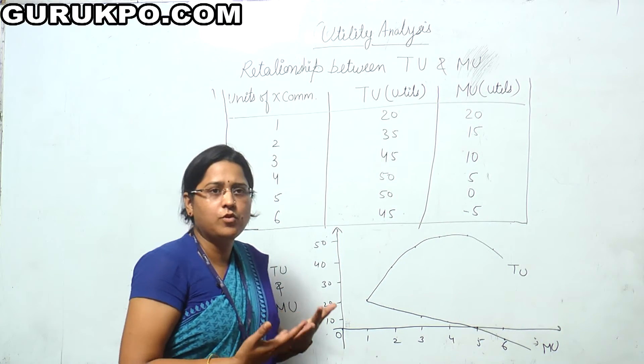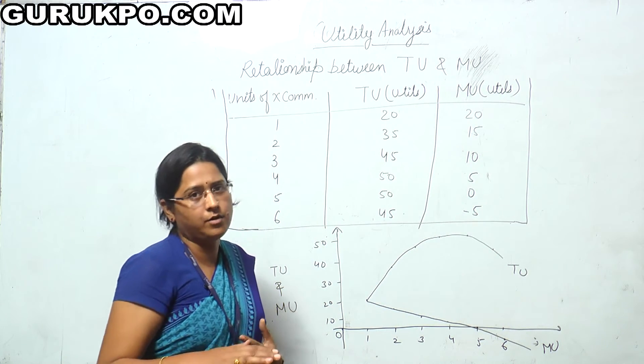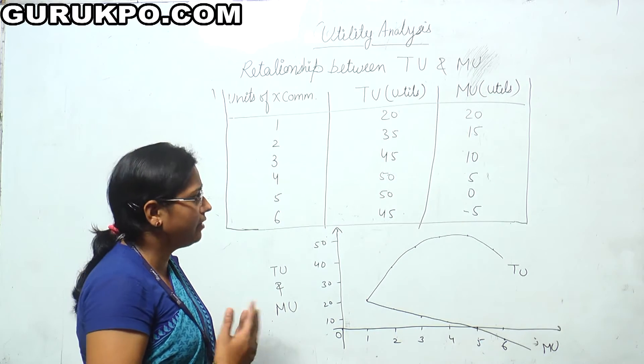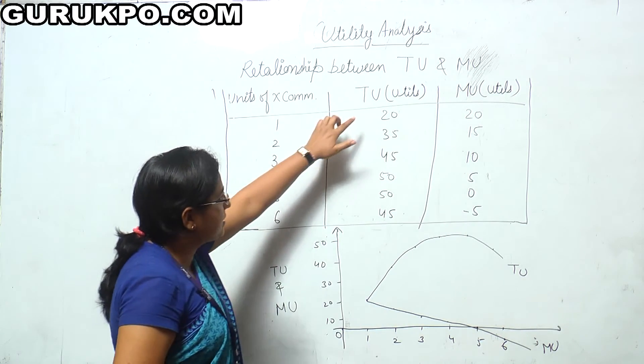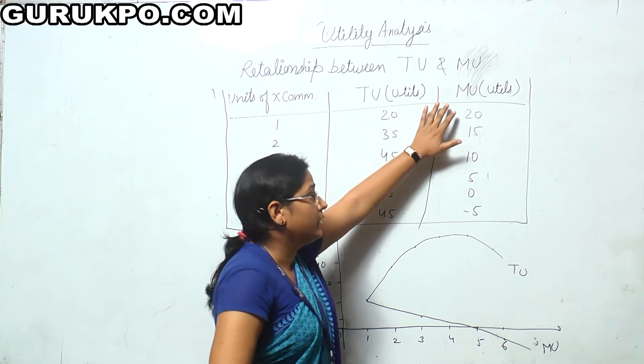As we consume more and more, we satisfy from that particular commodity. That's why we are not interested to consume more units. So as TU increases, MU diminishes.